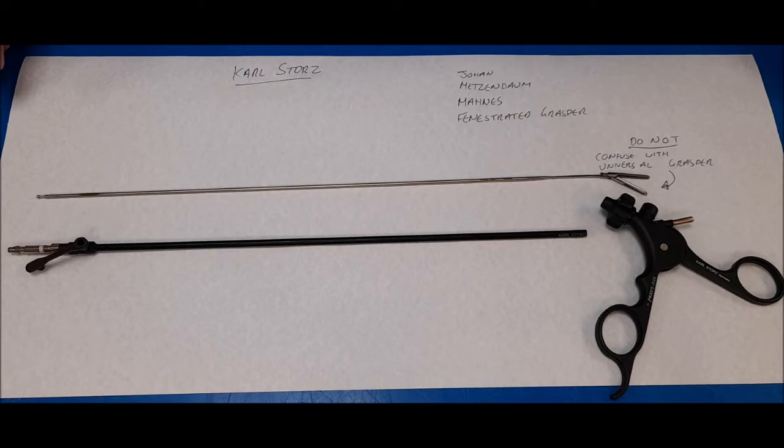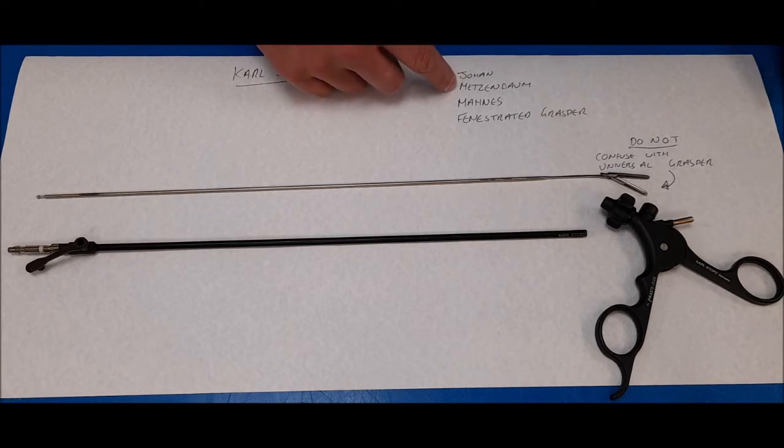I will demonstrate how to assemble and disassemble a Carl Storrs Grasper. This method can also be used with a Metzenbaum scissor, the mains grasper, and a fenestrator grasper.